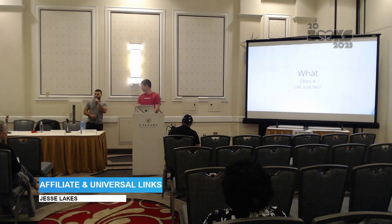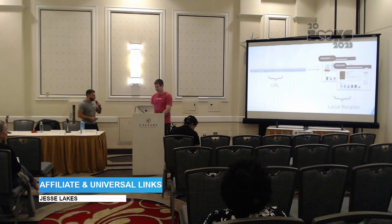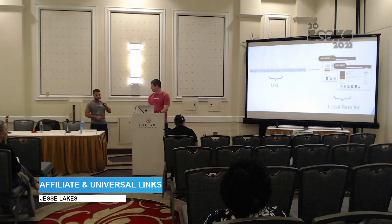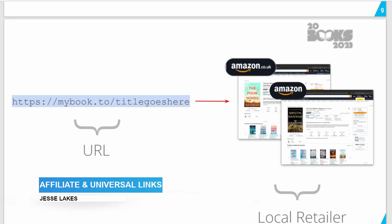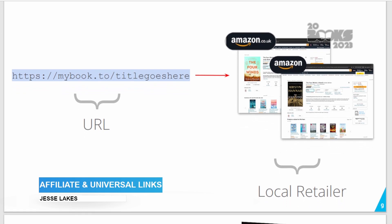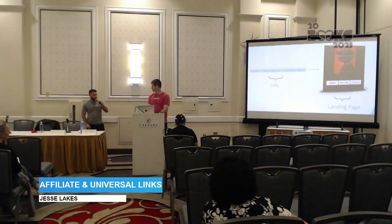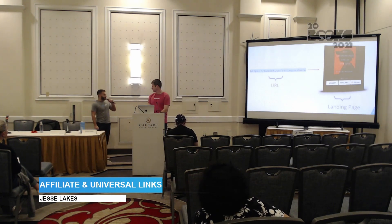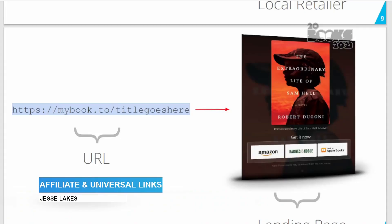You're probably wondering what a Universal Booklink actually looks like in practice. There are two main types. The first is for authors exclusive to Amazon — just a URL that detects the reader's IP or country and automatically sends them to the right Amazon storefront. There's also a second type for authors that go wide: a landing page hosted at a URL that includes all the different bookstores an author has listed their books on.